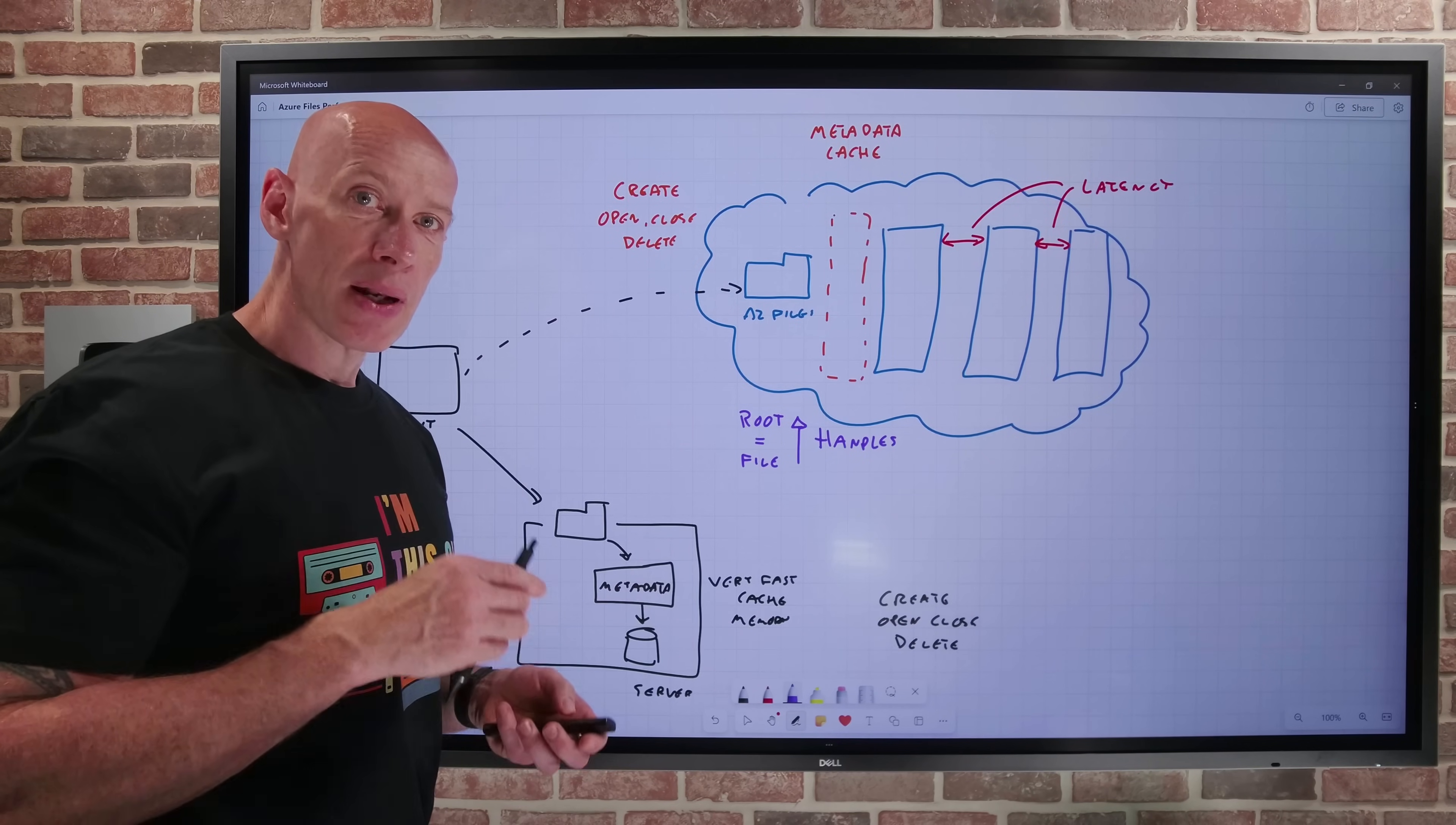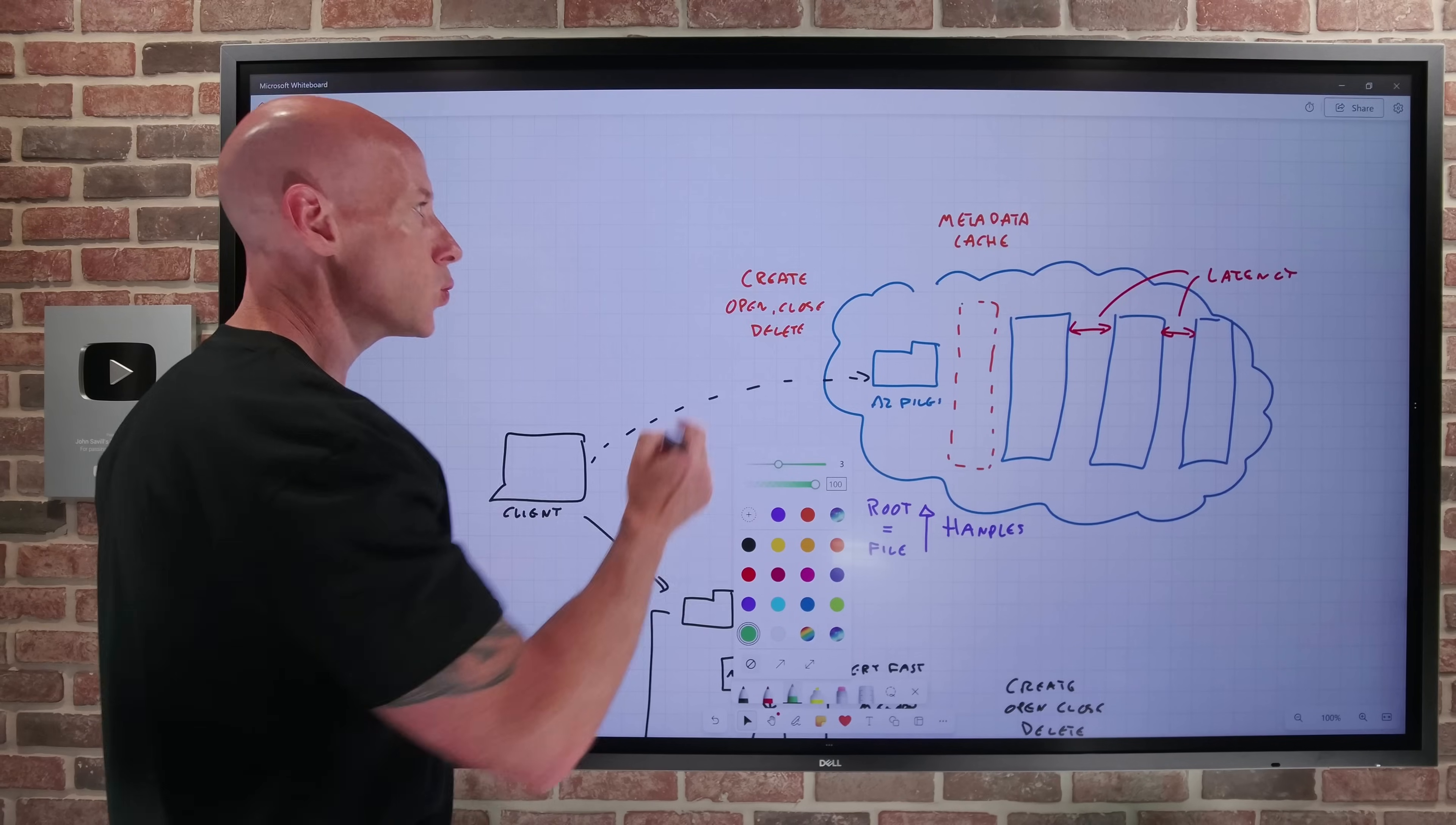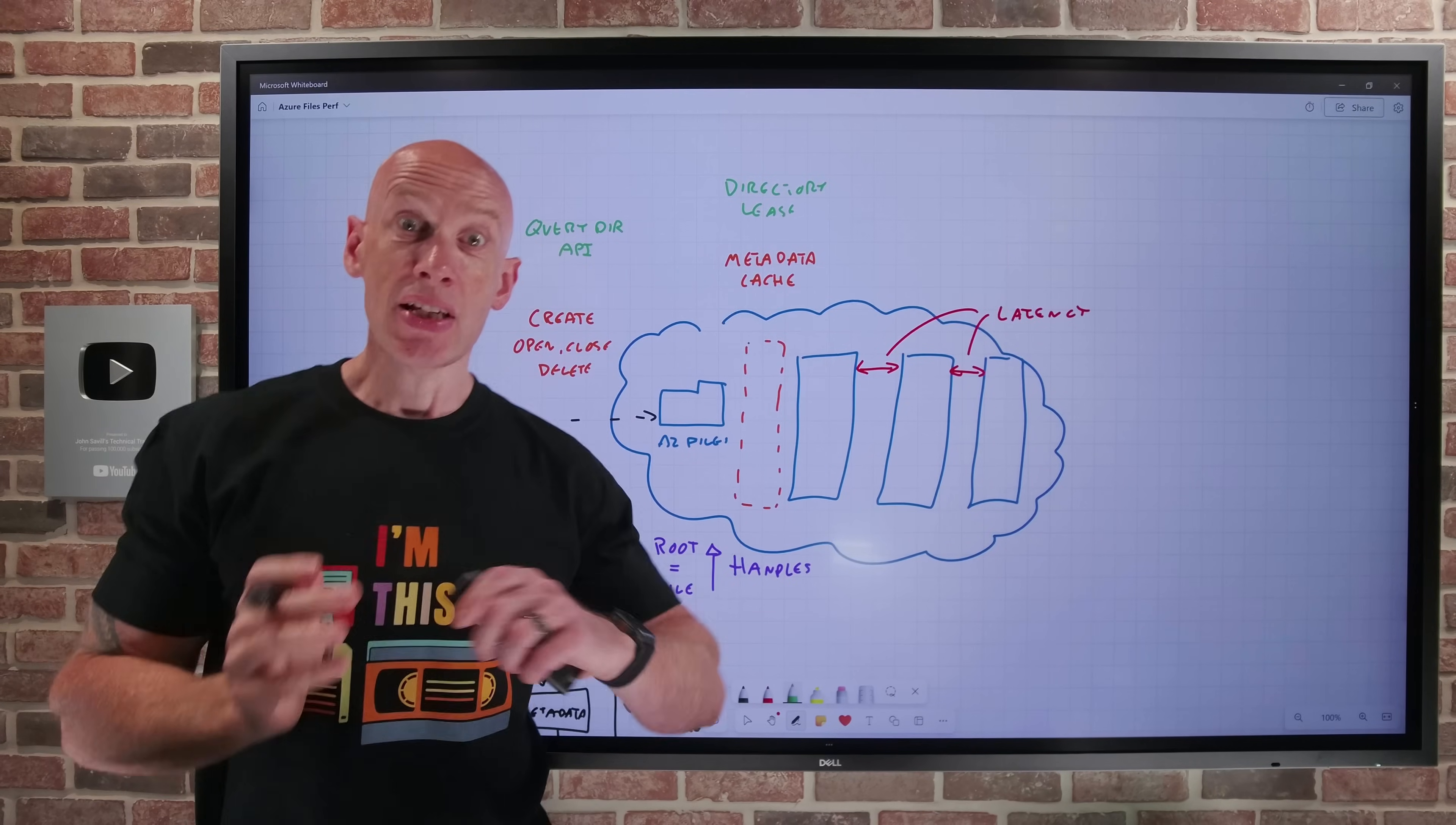But there are other things happening as well. So if I think about this interaction, the metadata cache is about working on files. But another feature is directory leases. And what directory leases is going to apply to are interactions where I'm using the query directory API.